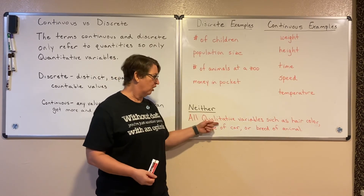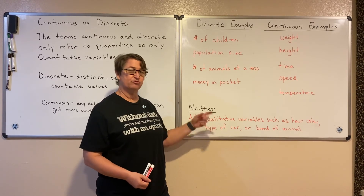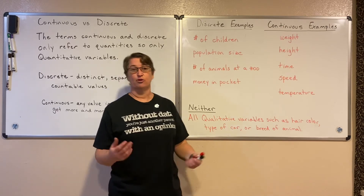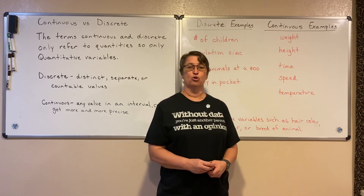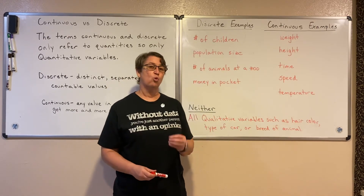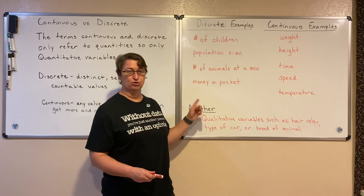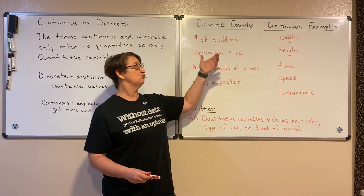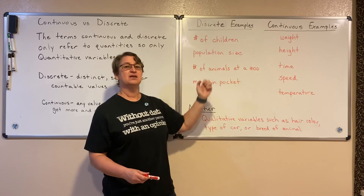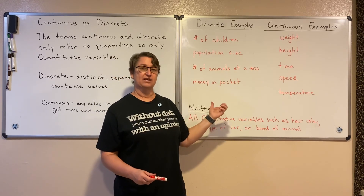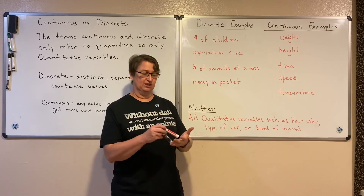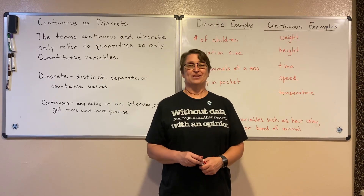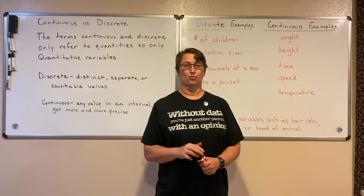All of our qualitative variables — such as hair color, the type of car you drive, or the breed of your animal — are neither continuous nor discrete, because those terms don't make sense unless we're dealing with a quantitative value. Math Made Simple at Simpson Math.